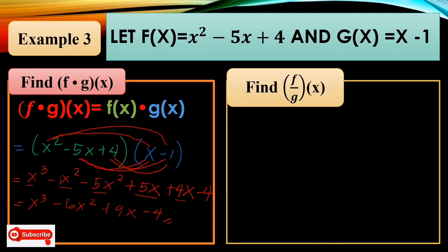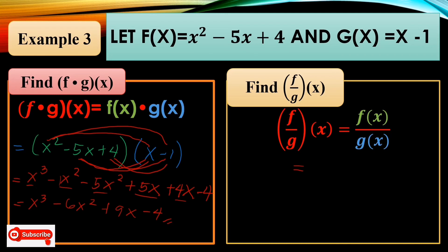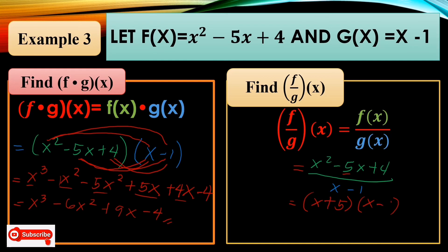Now find f/g(x) = f(x) over g(x) = (x² − 5x + 4)/(x − 1). Factor the numerator: x² − 5x + 4 = (x − 1)(x − 4). Cancel the common factor (x − 1), so the answer is x − 4.